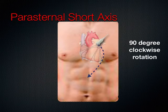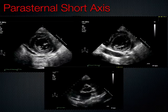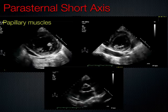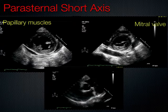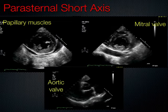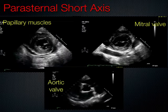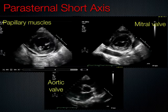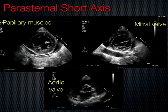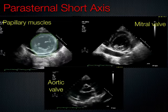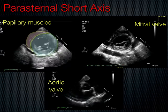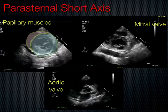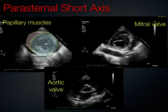Turning the probe from the parasternal long axis view 90 degrees clockwise, we can intersect the heart in its short axis and slice it like a loaf of bread, seeing the left ventricle at several different levels. The papillary muscle level is a cut near the apex. The mitral valve looks like a fish mouth, and the aortic valve shows the classic Mercedes sign assuming a tri-leaflet valve. In the short axis view, the left ventricle should appear circular like a donut with a small beret — the right ventricle — sitting atop. If the left ventricle does not appear circular, it often represents pathology.